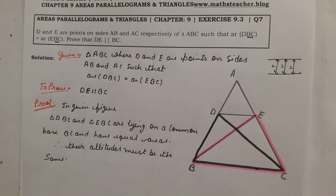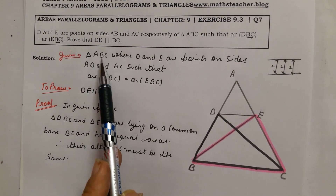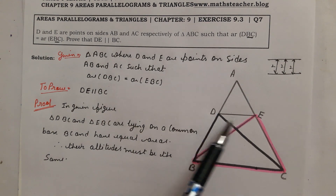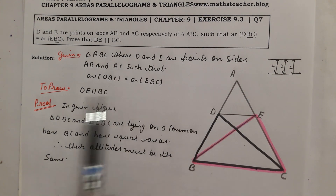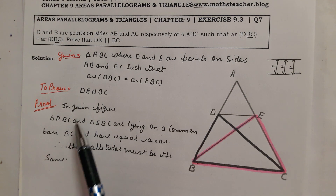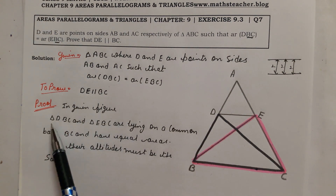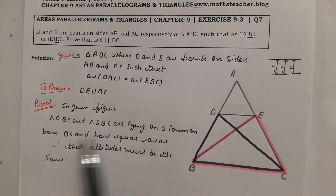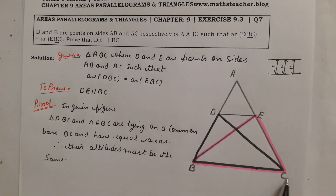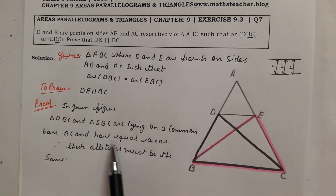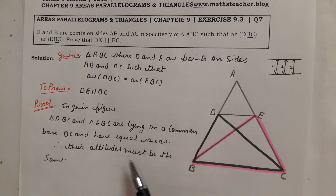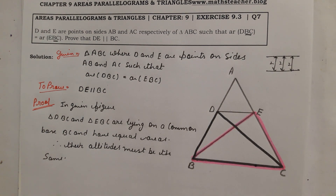Now let's write the proof. Given: triangle ABC where D and E are points on sides AB and AC respectively, and the area of triangle DBC equals the area of triangle EBC. In the given figure, triangles DBC and EBC lie on a common base BC and have equal areas. Therefore their altitudes must be the same.